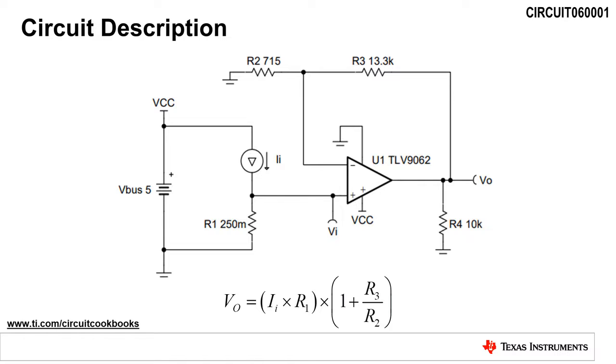Current sensing circuits are used to convert and amplify an input current, also known as a load current, to an output voltage. This circuit is called low side because the sense resistor, R1, is connected to ground.